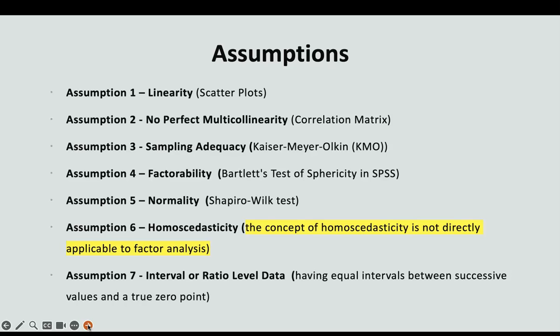Assumption 5: Normality. The normality assumption refers to the expectation that the observed variables follow an approximately normal distribution within the sample. Normality implies that the values of the variables are systematically distributed around the mean, with most values clustering near the center and fewer in the tails — the shape of a normal curve. We will use the Shapiro-Wilk test to test normality, and if the Shapiro-Wilk significance level is above 0.05, then normality is met.